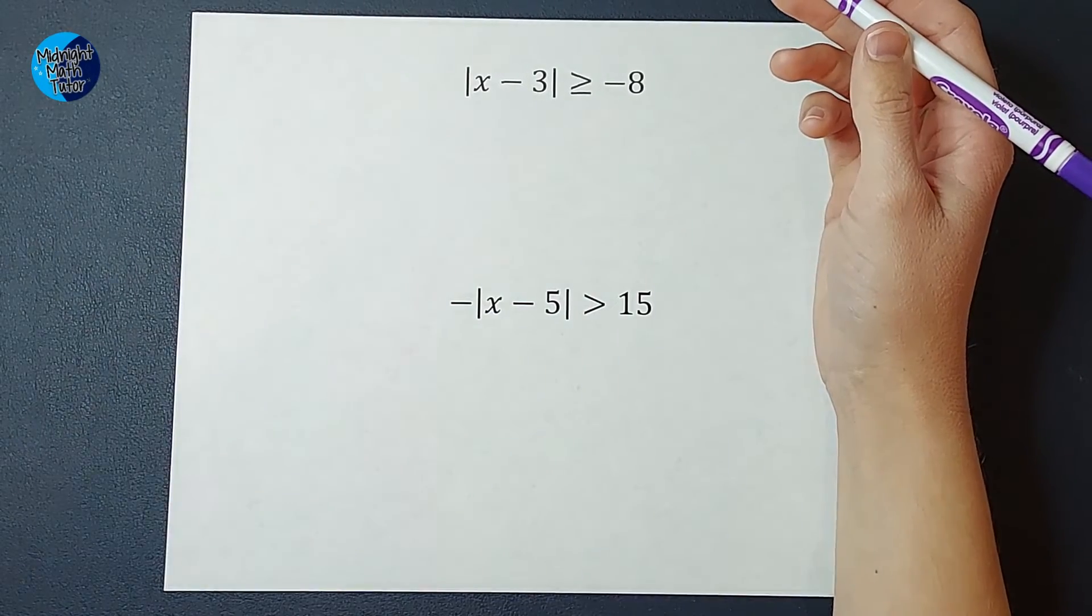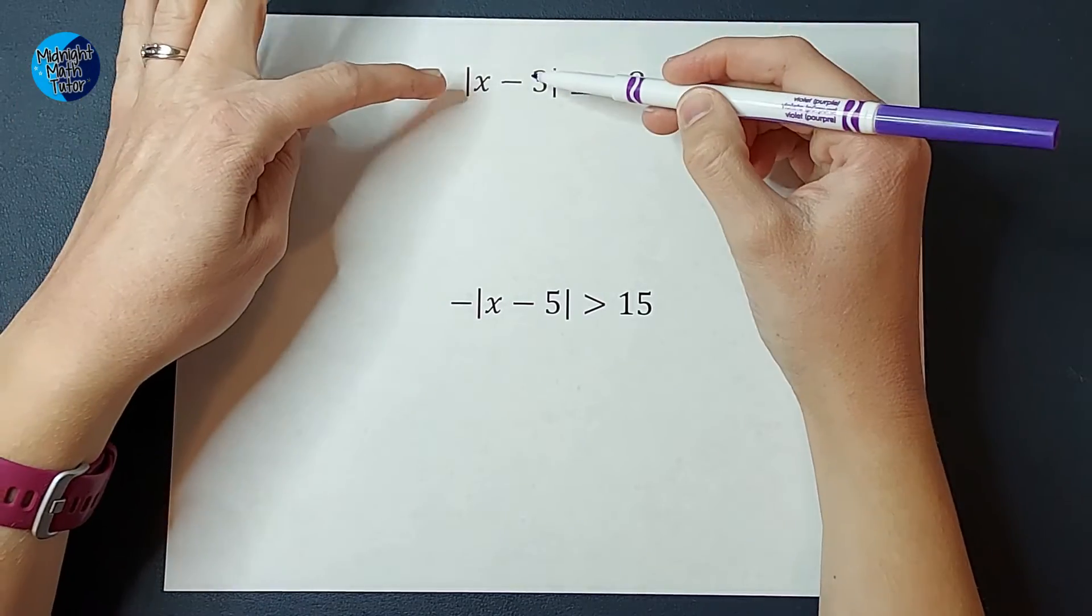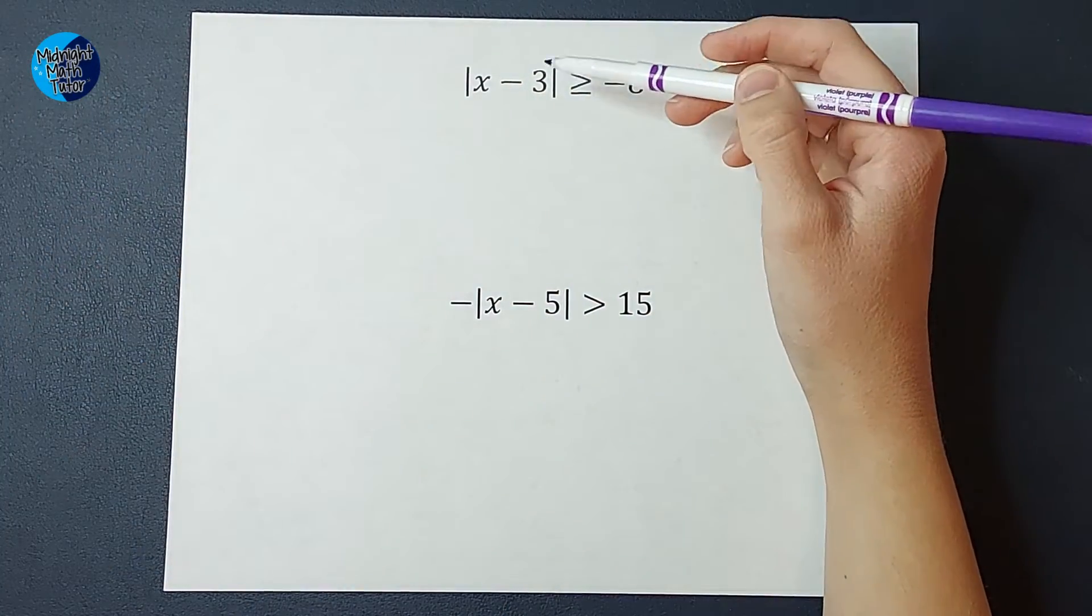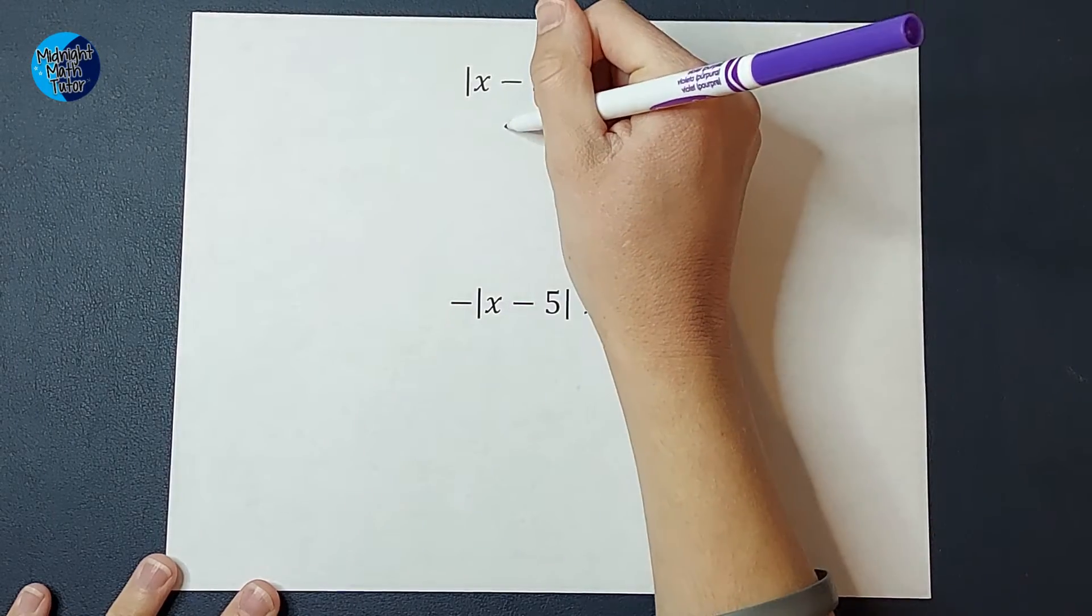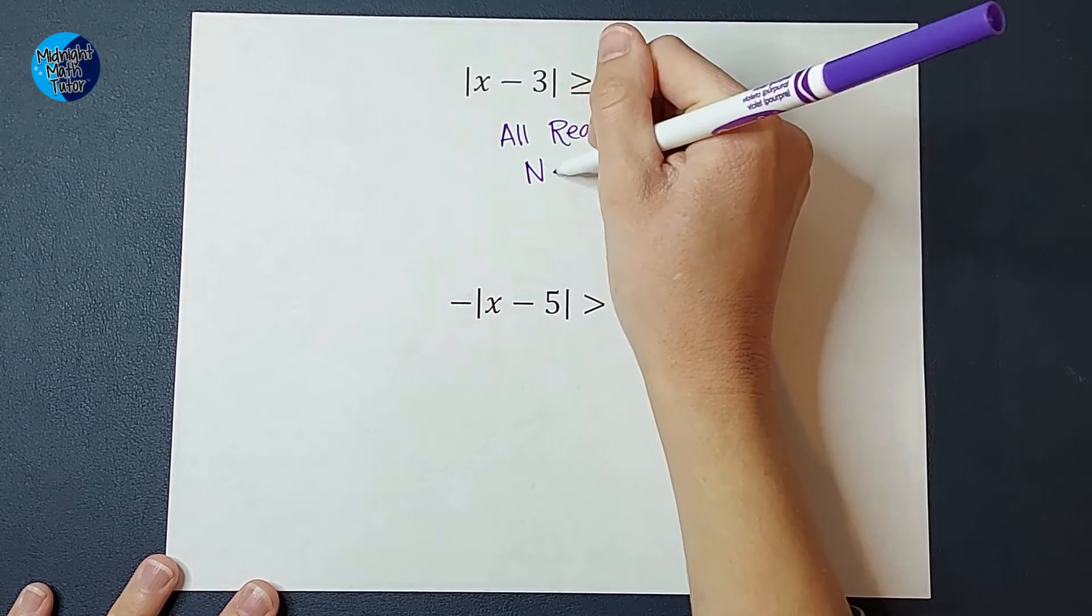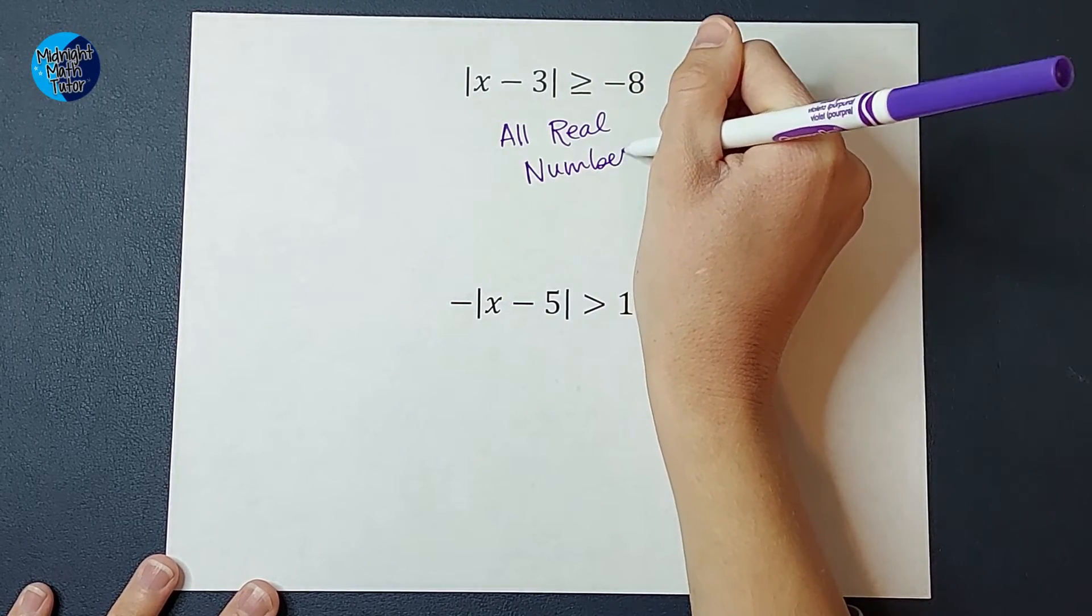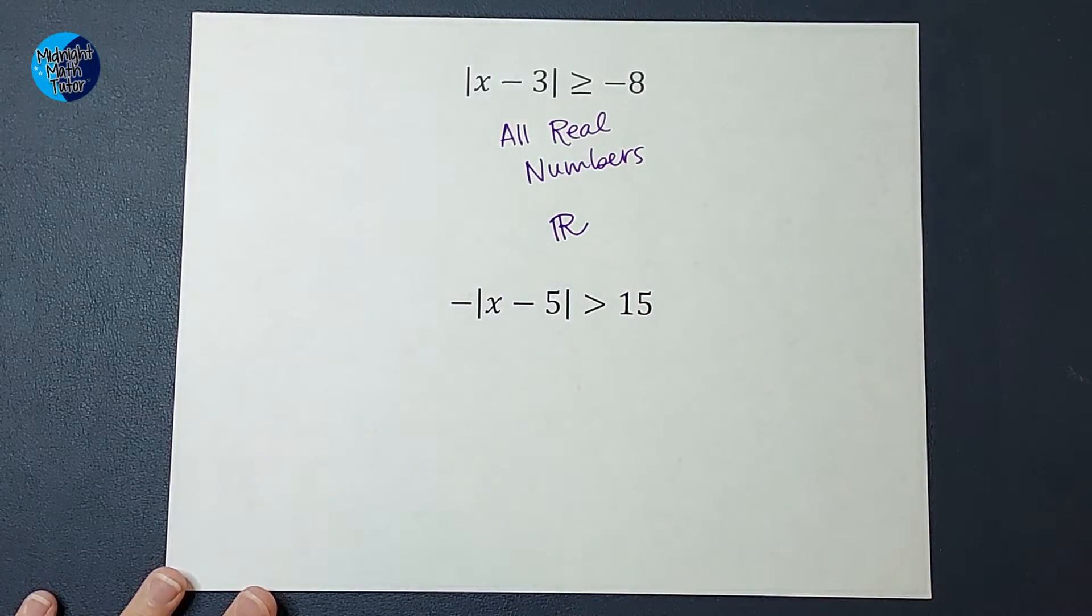No, there's not. There's no number I could plug into this that would make this not true because this is always going to be positive and a positive is always going to be greater than a negative. So the answer to this is all real numbers. Or you can write it as an R with two lines. That means all real numbers.